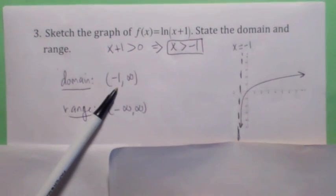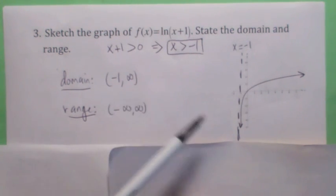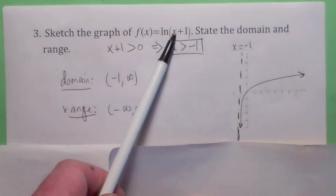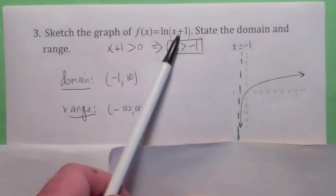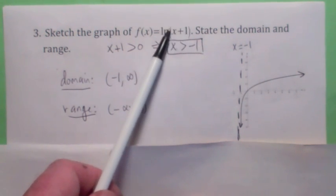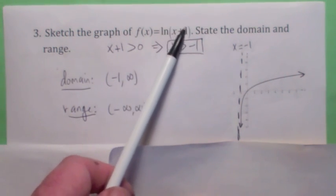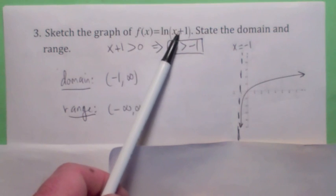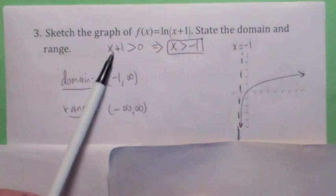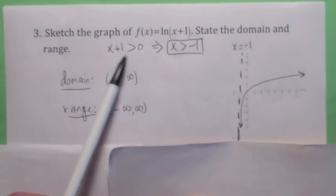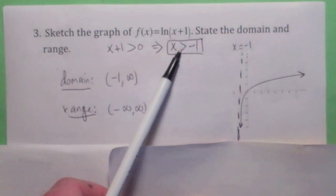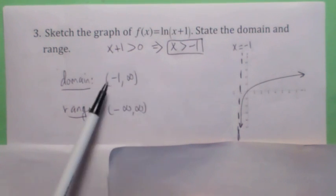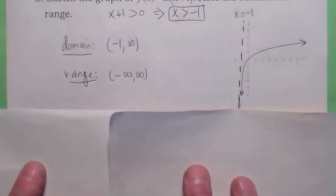There's a nice algebraic way to find that — you don't really have to graph the function. This thing inside the parenthesis is called the argument; in this case it's x plus 1. Whatever you take the natural log of has to be greater than 0, so just set x plus 1 greater than 0 and solve for x. Subtract 1 from both sides — x is greater than negative 1 is your domain. The range is negative infinity to infinity.